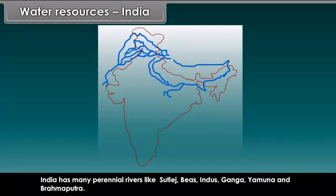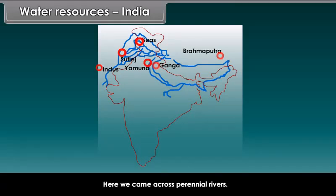India has many perennial rivers like Sutlej, Beas, Indus, Ganga, Yamuna, and Brahmaputra.